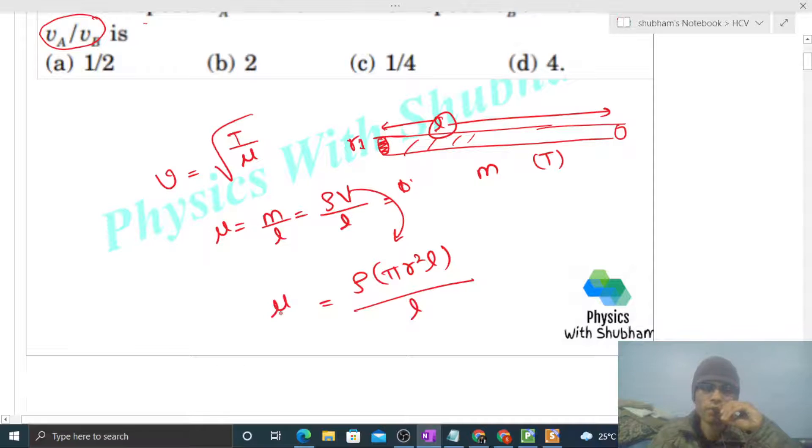So speed can be written as square root of T divided by density times π r². Now we have two strings given: string A and string B.